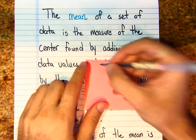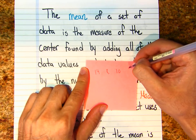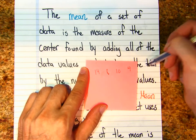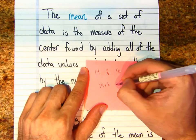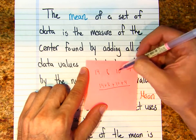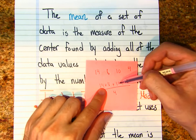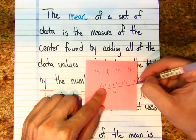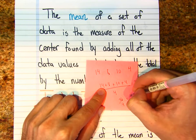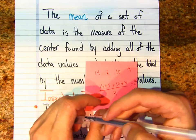So if I wanted to find the mean of these numbers — 14, 8, 10, and 4 — I just add these numbers up: 14 plus 8 plus 10 plus 4, and then divide by how many data values there are. There are 4 data values. So 14 plus 8 is 22, plus 10 is 32, plus 4 is 36, over 4. What is 36 divided by 4? That's 9. So the mean for these four data values is 9.